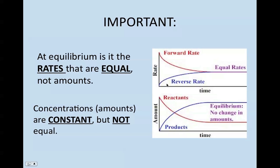So in these two charts, which are very common, the first one is looking at rate. As we can see here, initially we have a very fast forward rate and a slow reverse rate of reaction. As we continue through time, the forward rate slows down, our reverse rate speeds up, and eventually our rates are equal.